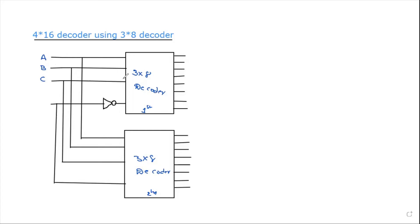The input is the same for both decoders. We can see the inputs here. This is the enable pin. The enable pin configuration is the same for both decoders.